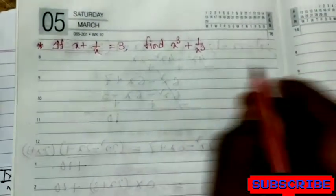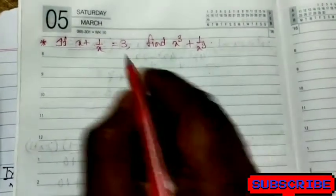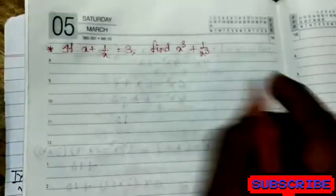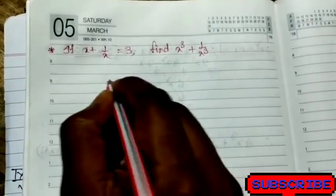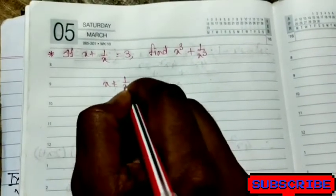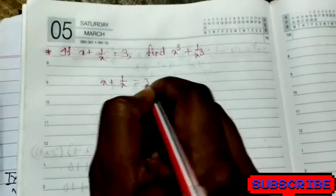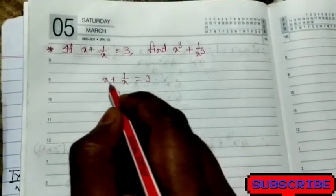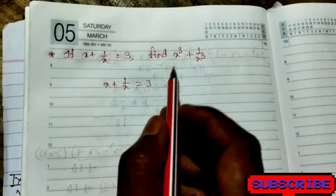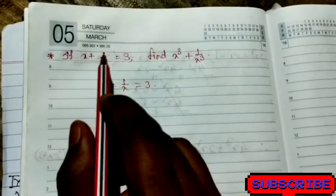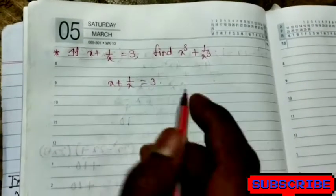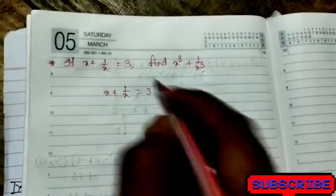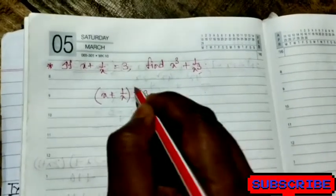Next, from the polynomial chapter, identity question: if x plus 1 by x equals 3, then find x cube plus 1 by x cube. In class 8 we have already done the same kind of question with squares — if x plus 1 by x equals 3, find x square plus 1 by x square — but here we need to find the cube, so first we cube both sides.